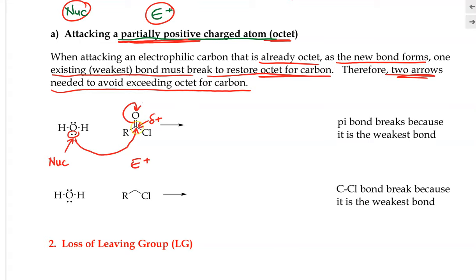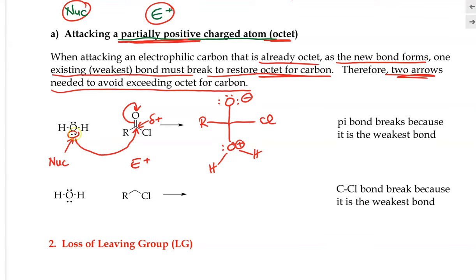Whenever you attack a carbon-carbon double bond, as the new bond is being formed, the weakest bond — the carbon-oxygen pi bond — will be broken, since pi bonds are weaker than sigma bonds. So if we have to break a bond to restore the octet for carbon, it will be the pi bond that is broken, and the electrons will be given to the oxygen since it is more electronegative. Following through with this arrow, we produce the following product.